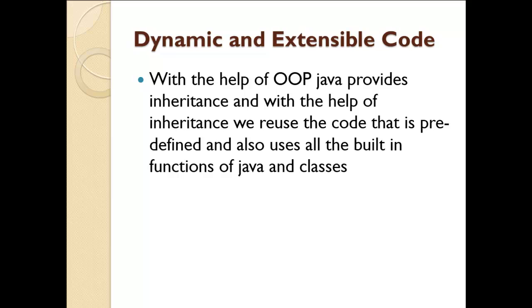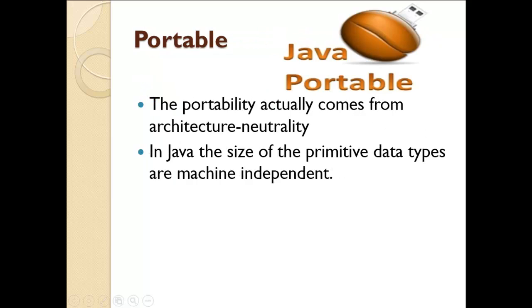Java is dynamic and has extensible code. With the help of object oriented programming, Java provides inheritance, and with inheritance we can reuse predefined code and use all the built-in functions and classes available in Java. Java also has portability, which comes from its architecture neutral or platform independent nature. In Java, the size of primitive data types is machine independent, which is why we can easily transfer code from one machine to another.